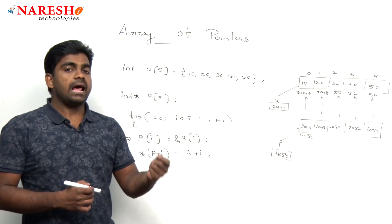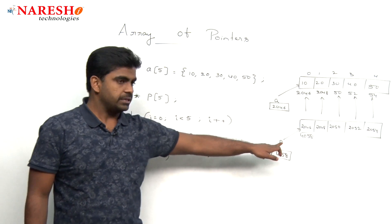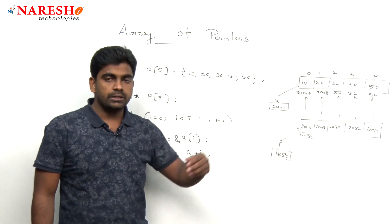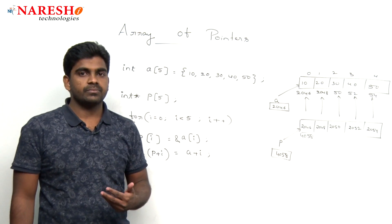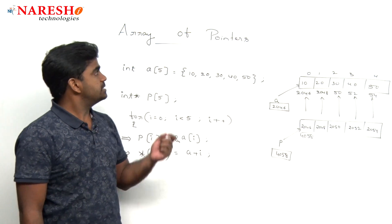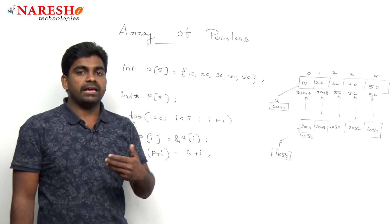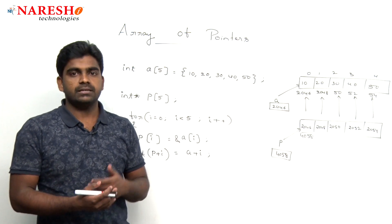Now, how we are accessing the information through p? So that you try, how to display the elements? Here it is using array of pointers program, right.